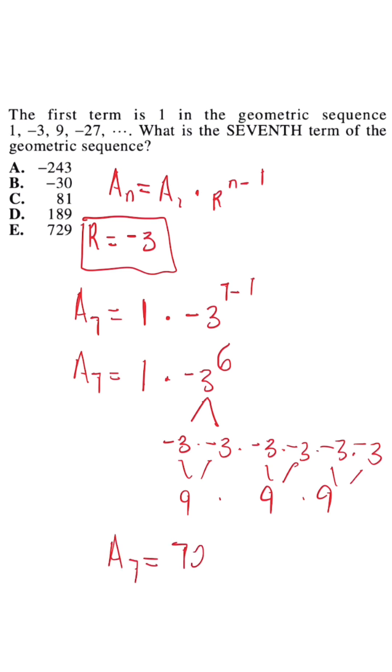When we simplify, we're going to get an answer of 729. I didn't bring down the multiply by 1 because it's not going to change. Our answer will still be 729.